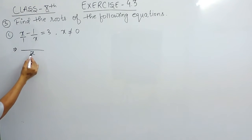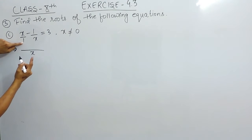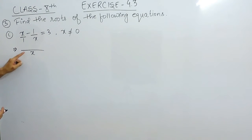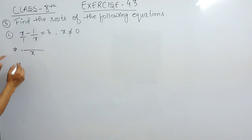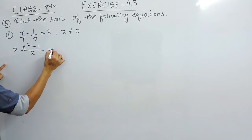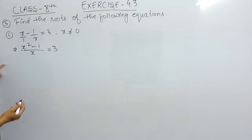The LCM of 1 and x is x. 1 divided by 1 will give x, so x divided by x gives x squared. Or you can simply cross-multiply: x multiplied by x is x squared, and 1 multiplied by 1 is 1, so this equals 3.